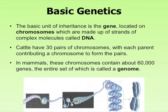The gene is located on a chromosome, which is made up of strands of complex molecules we call DNA. Cattle have 30 pairs of chromosomes, and each parent contributes a chromosome to form those pairs. So an individual receives half of their genetic information from the mother and half from the father — the same is true when mating cattle: half from the bull and half from the cow to produce a calf.